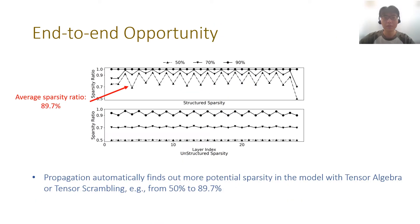This experiment shows the end-to-end opportunity discovered by sparsity propagation. Specifically, we prune all layers in MobileNet to three targeted sparsity ratios: 15%, 17%, and 19%. The figure shows the sparsity ratio of each layer after sparsity propagation. As we can see, the sparsity ratio increased significantly after propagation, especially for structured sparsity patterns. For example, the total sparsity ratio of the structured sparsity increased from 50% to 89% after sparsity propagation.